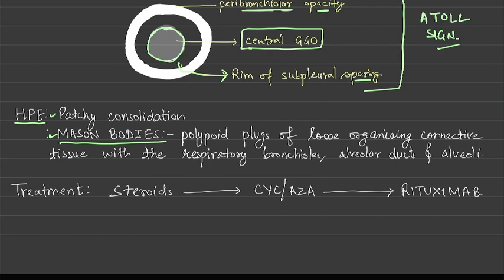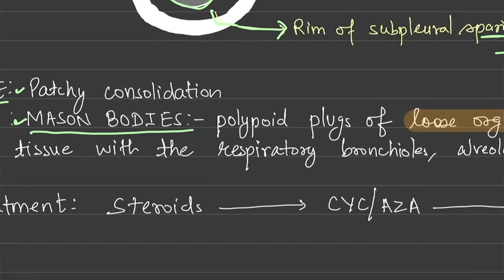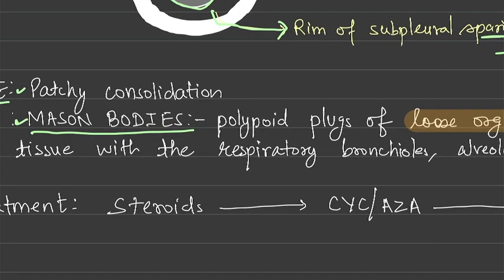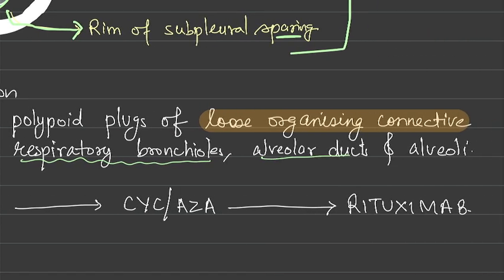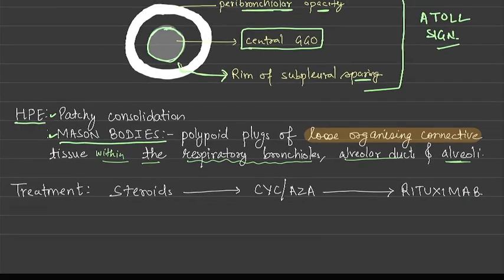Second is the Mason bodies. Mason bodies are polypoid plugs of loose organizing connective tissue within the respiratory bronchioles, alveolar ducts, and even alveoli. So there will be polypoid plugs of loose organizing connective tissue, which is known as Mason bodies. Patchy consolidation and Mason bodies are two findings that you will see in this case.